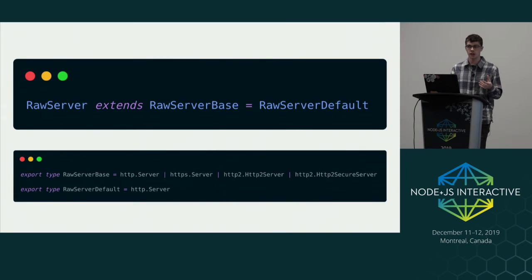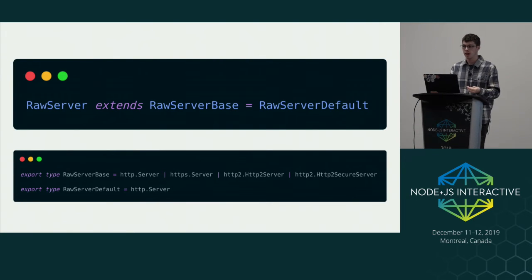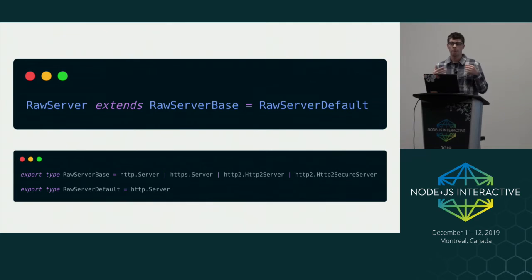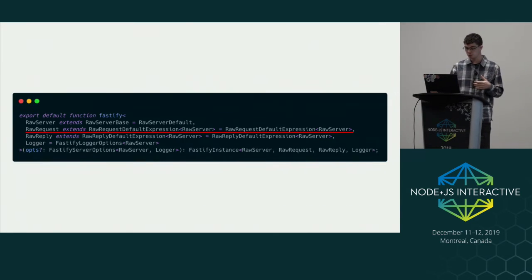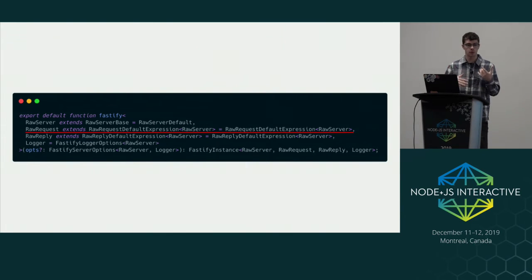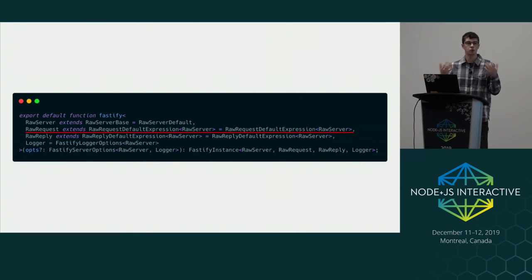It enforces that this generic is one of those four Node.js server types. This is important because when we create a Fastify server as a library, we need you to give us the types for your server. The default — equals RawServerDefault — is HTTP.Server, so by default Fastify will return an HTTP Node server. You can, though, enable HTTPS and HTTP2. The request, reply, and other properties will differ when you define a different server type.